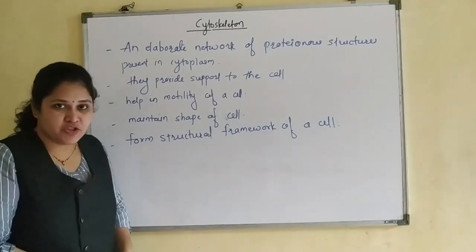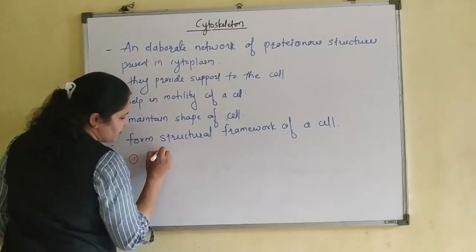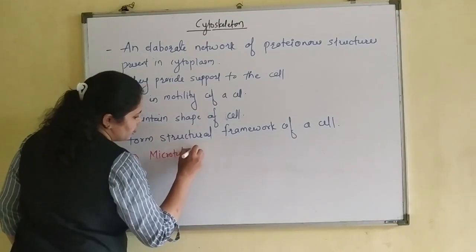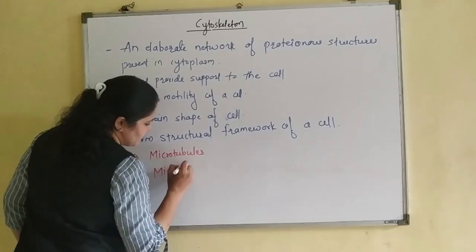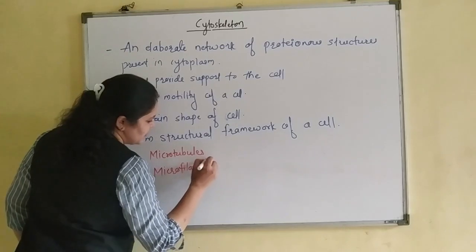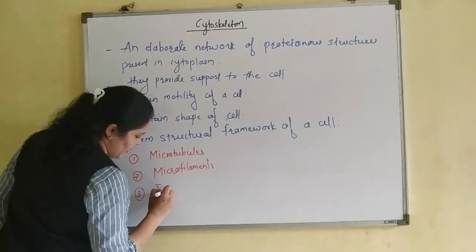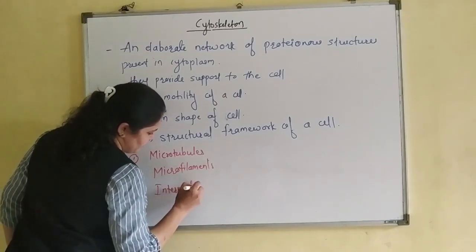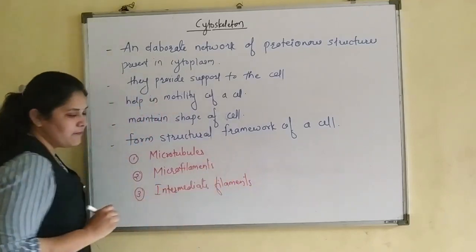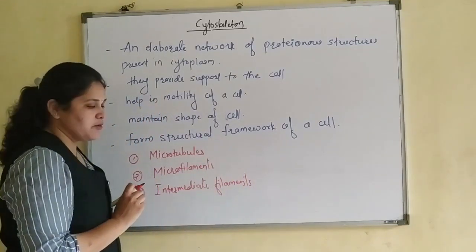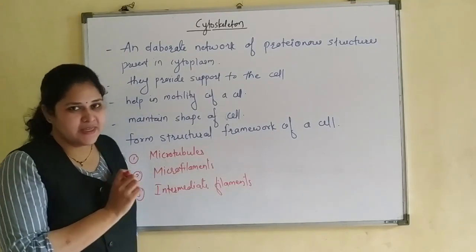There are three types of proteinaceous structures present in the cytoplasm. These are: microfilaments, microtubules, and intermediate filaments. Now we are going to study these three structures in detail.